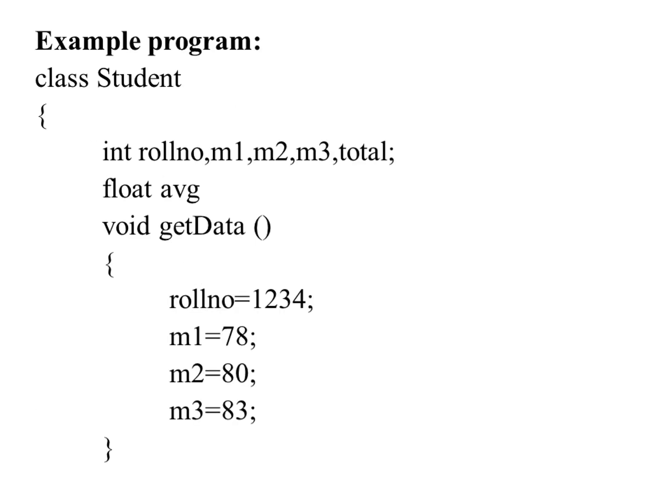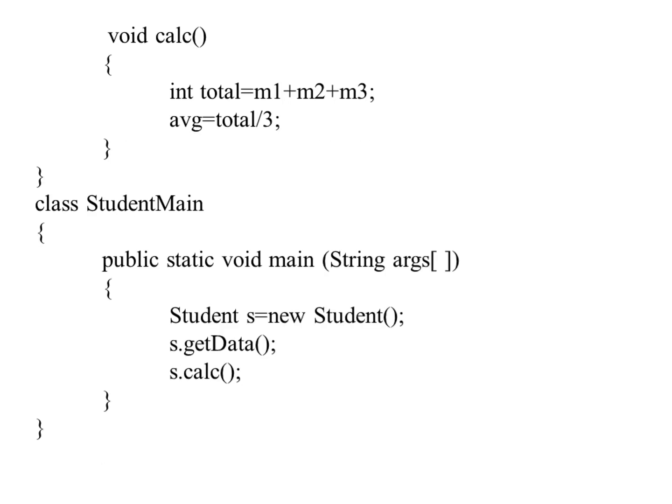Here is another example for a class called Student, which has roll number, m1, m2, m3, total, and average. A getData method is used where no arguments are passed — the roll number, m1, m2, and m3 are assigned directly. There is another method called calc that calculates the total and average. In the main method, an object for the Student class is created, and both methods are called using the object: s.getData() and s.calc(). That's all about this presentation.